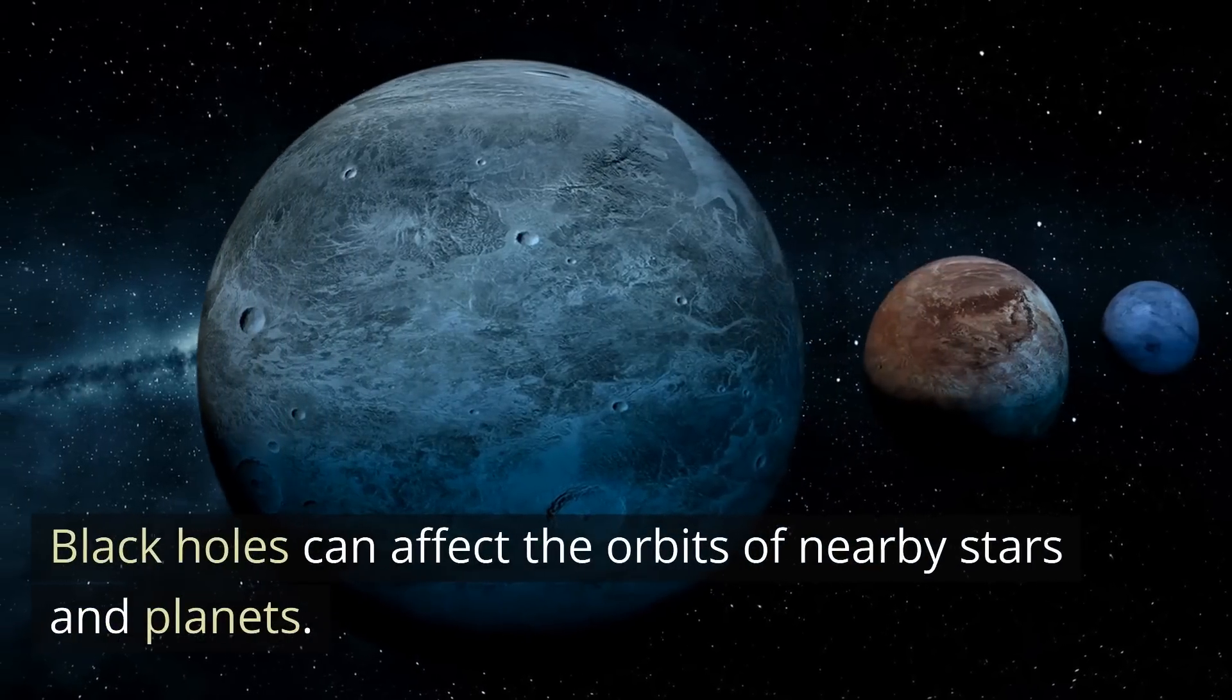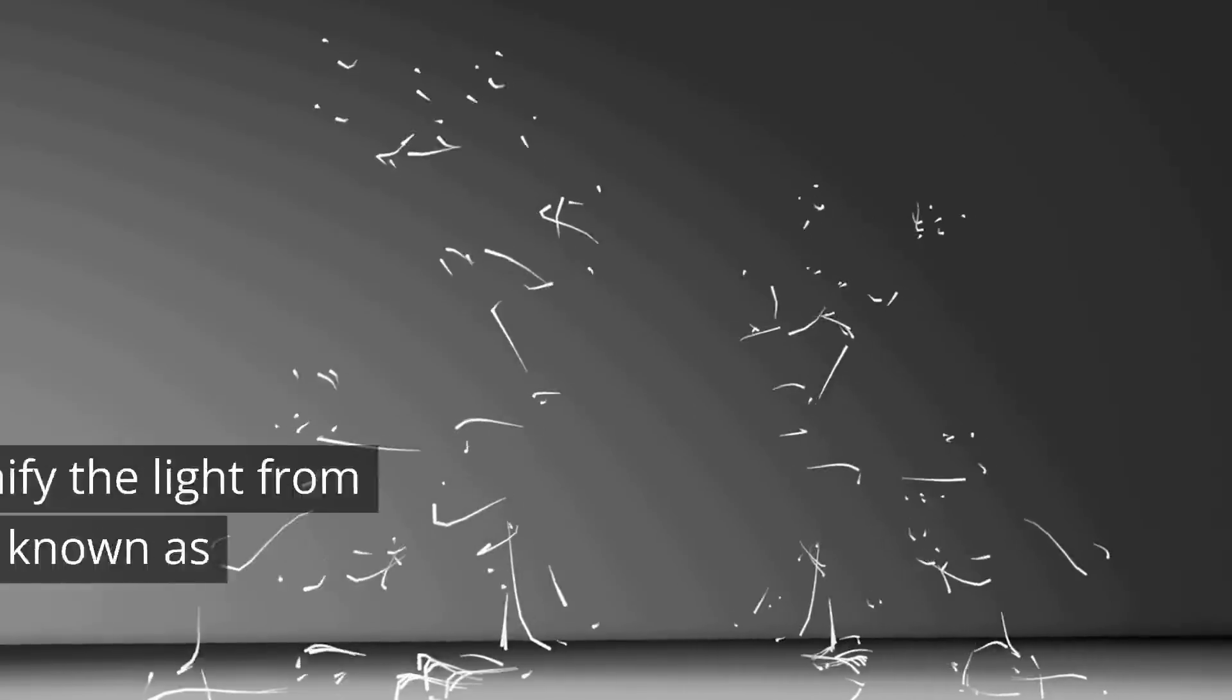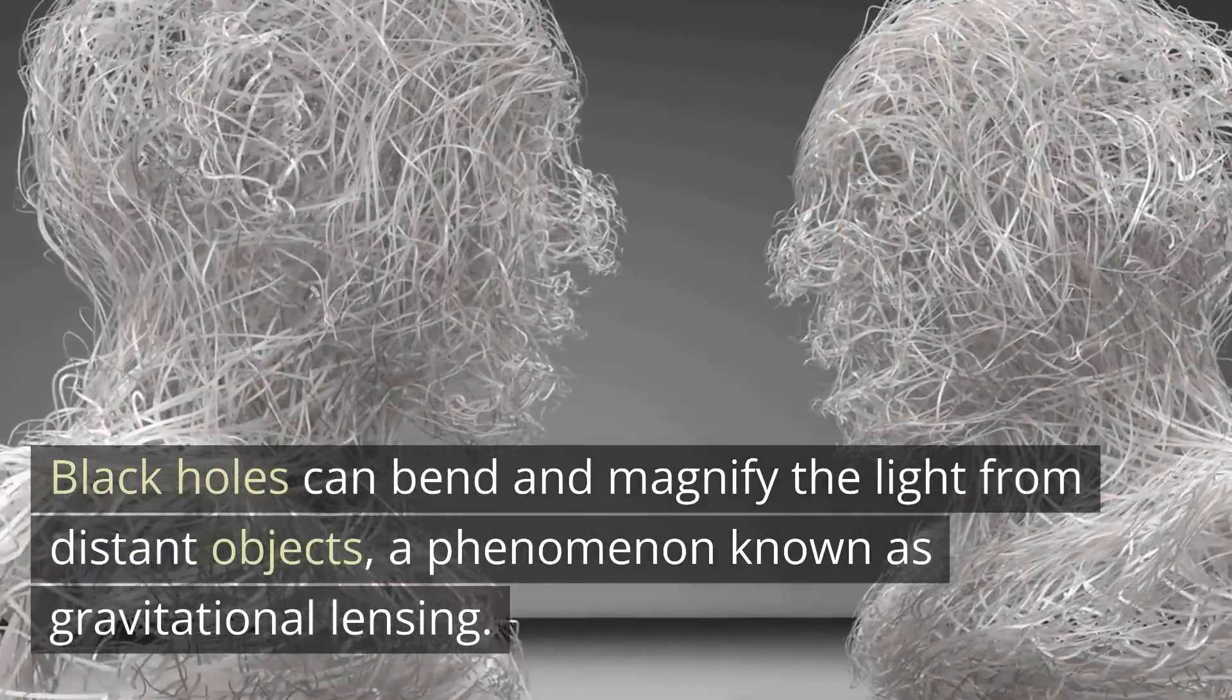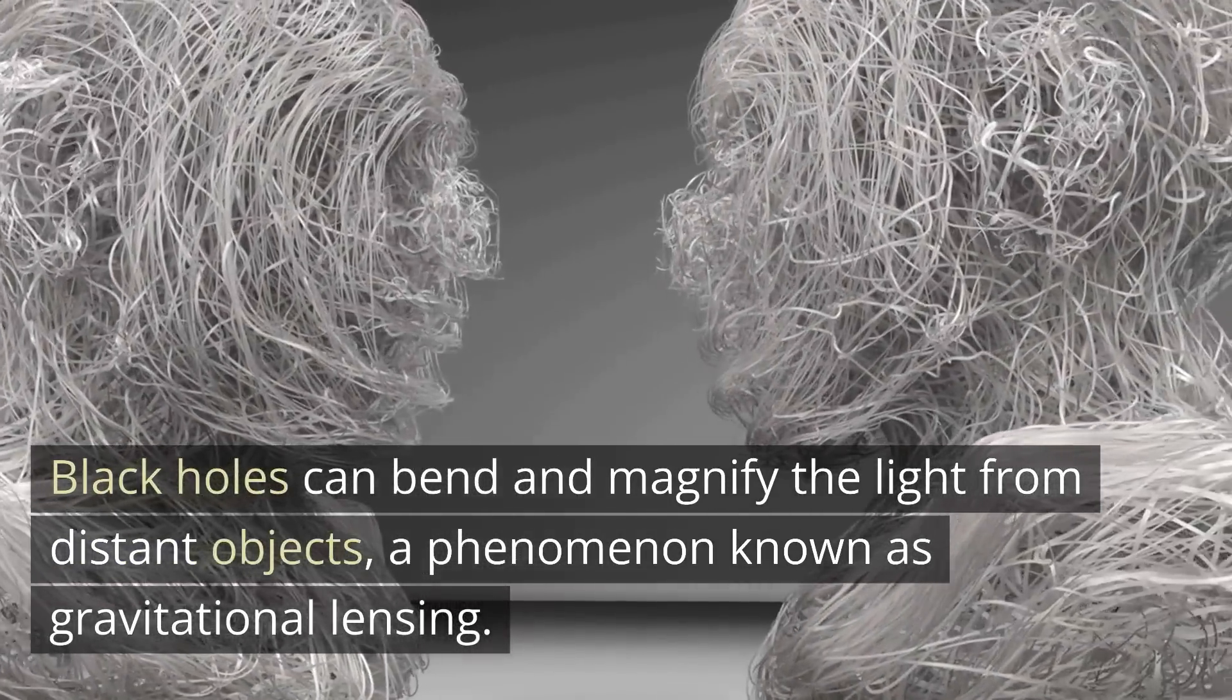Black holes can affect the orbits of nearby stars and planets. Black holes can bend and magnify the light from distant objects, a phenomenon known as gravitational lensing.